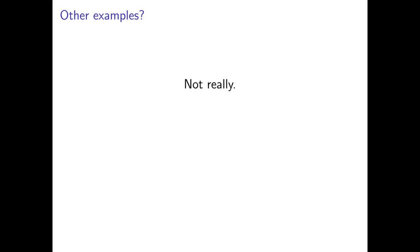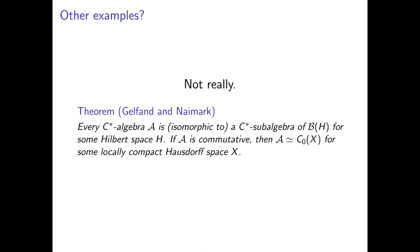In fact, these examples are essentially all that exist. This is the content of a fundamental theorem: every C-star algebra A is isomorphic to a C-star subalgebra of B(H) for some Hilbert space H. In particular, every commutative C-star algebra is isomorphic to C₀(X) for some locally compact Hausdorff space X. Explaining why this is true is the core goal of this video series — without it, you don't have much to go on when studying C-star algebras.